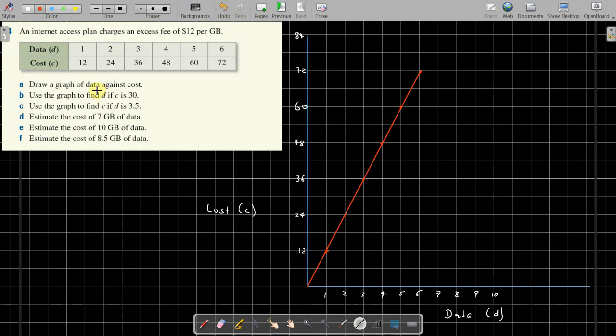Use the graph to find d if c equals 30. C is 30, which is about 24, that's there. So part b, find d, c is 30. Starting over this side, 24, that's 12, 6, that's it, c is 30 there. Go across and down, we're looking at 2.5.